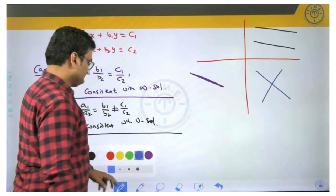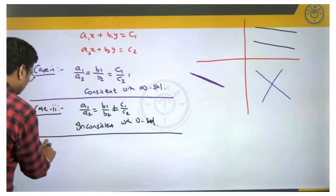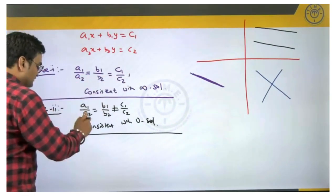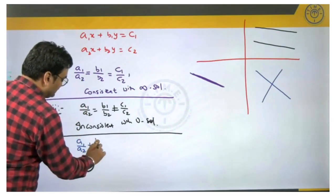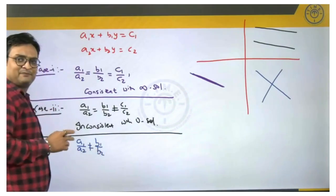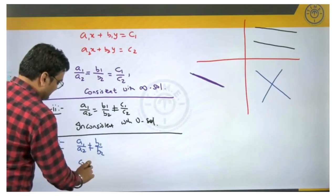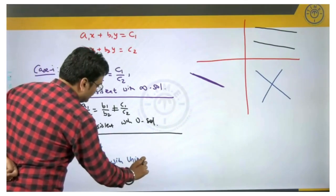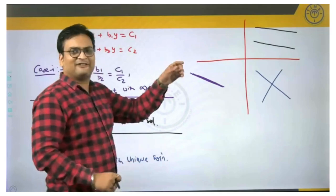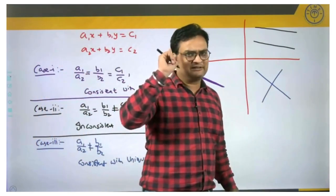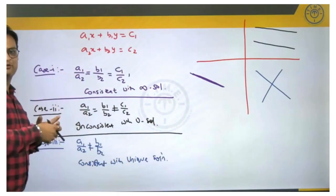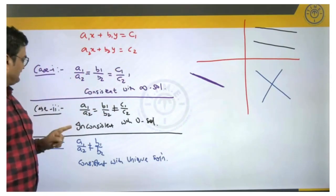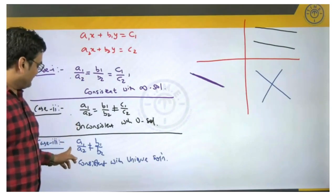Case 3 corresponds to the intersecting lines case. This happens when the ratio of x coefficients is not equal to the ratio of y coefficients — a1/a2 ≠ b1/b2. In this case we say the system of equations is consistent with a unique solution. Unique means single, because as seen in the graph there is only one point of intersection. Remember: overlapping lines → infinite solutions, parallel lines → no solution, intersecting lines → unique solution.